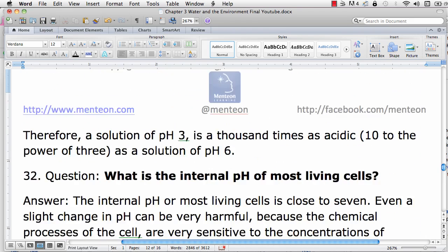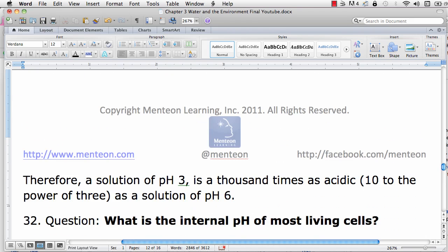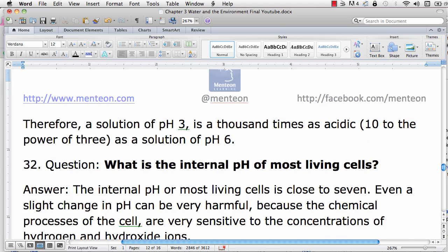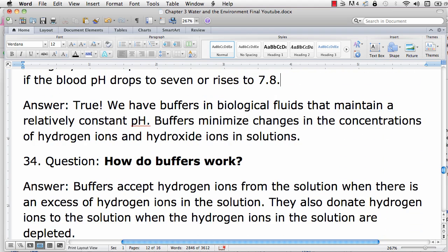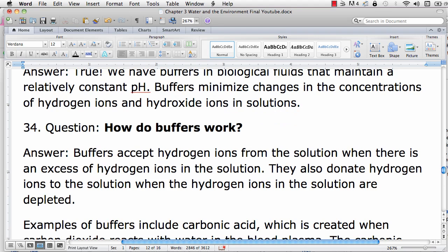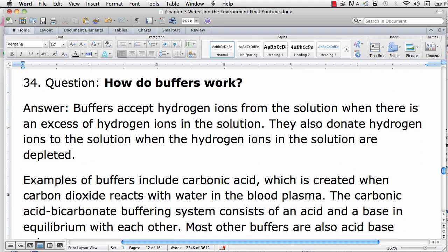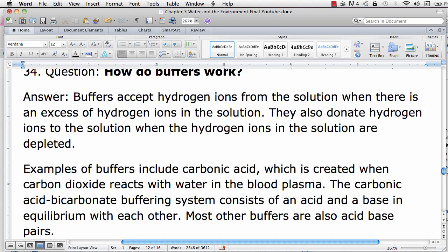To summarize, the internal pH of most living cells is somewhere around 7. The pH cannot rise much beyond 7.8 or below 7.0 for any extended period of time. Otherwise, the chemical processes in the cell are disturbed. Chemical processes in the cell are very dependent on the hydrogen ion and hydroxide ion concentrations inside cells.